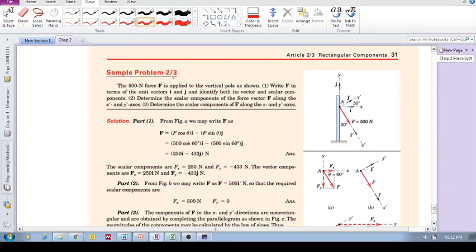Okay, sample problem 2.3. So we have the 500N force applied to the vertical pole as shown at A. Number 1, write F in terms of unit vectors i and j and identify both its vector and scalar components. Okay, well let's just do that.